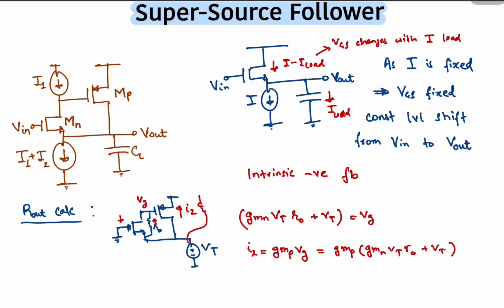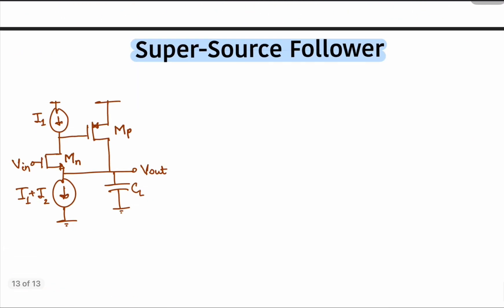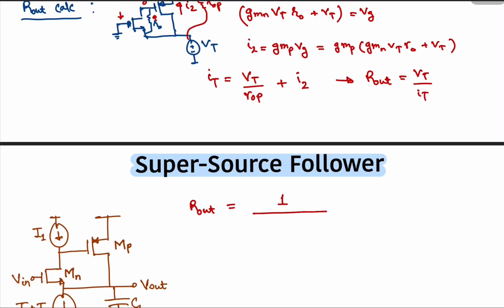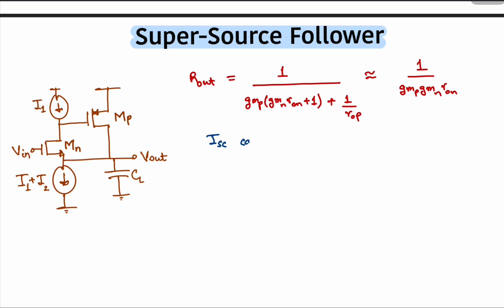We also have the output impedance of Mp in parallel. So the total current flowing out of the test voltage would be gmVt times gmVt times Rn. Note that for a common drain amplifier, the output impedance is approximately just 1 over gmVt times Rn.